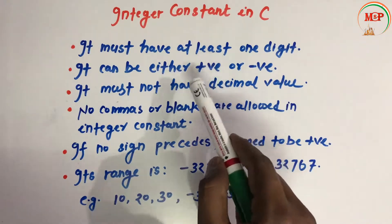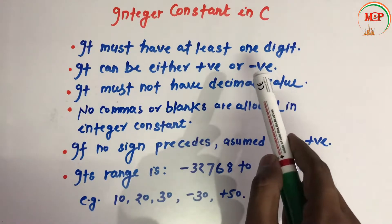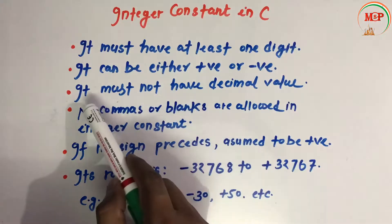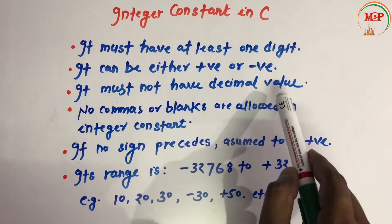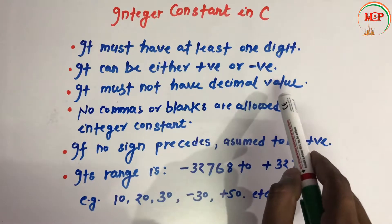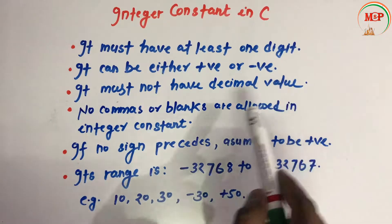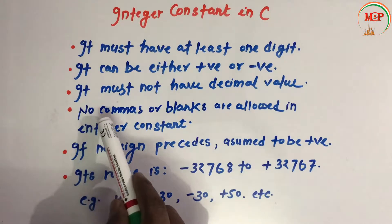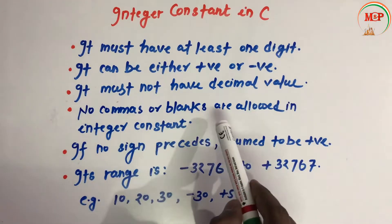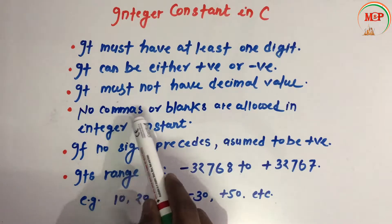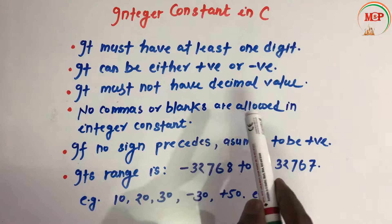If positive, it will have a plus sign or no sign. If minus is present, it is a negative constant. It must not have a decimal value, and no commas or blanks are allowed in an integer constant.